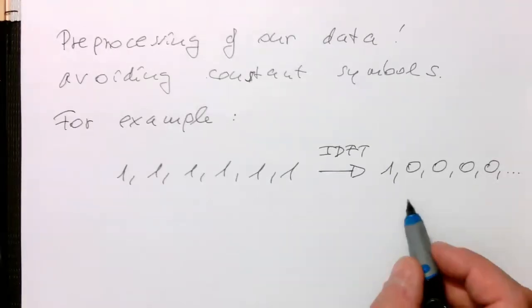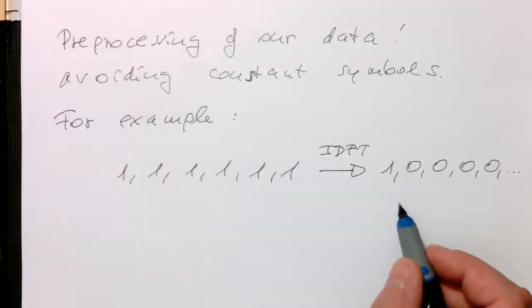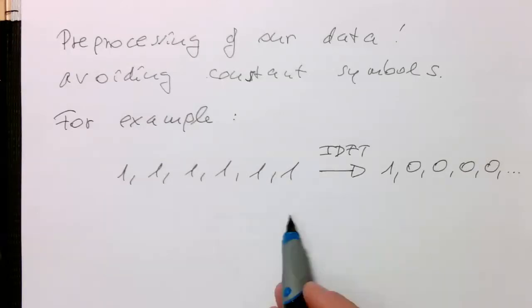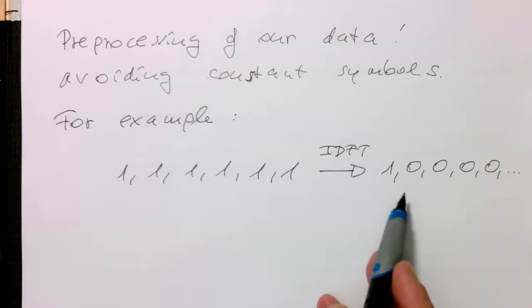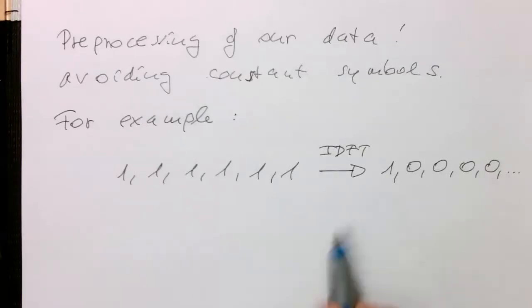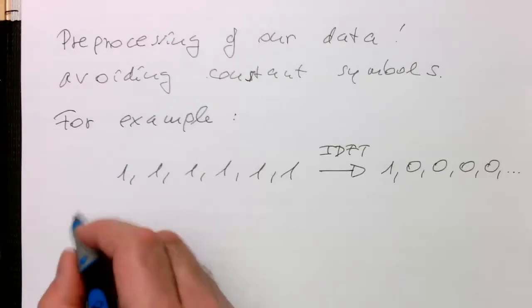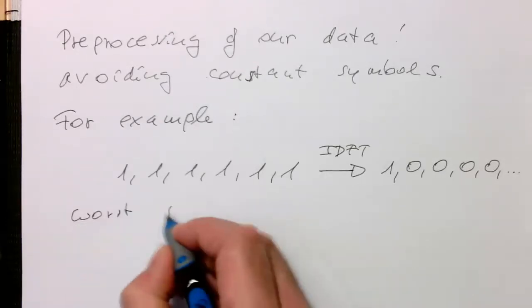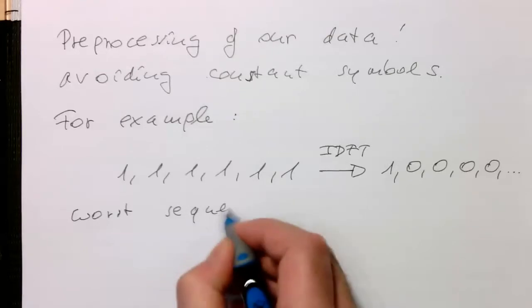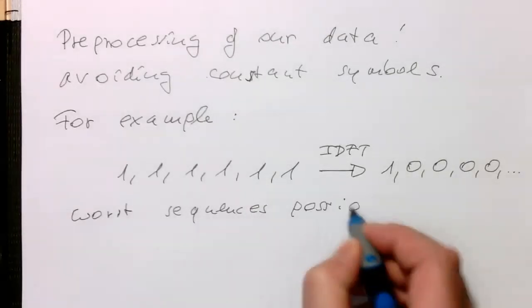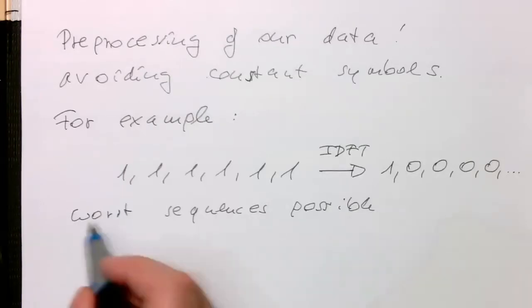This would be one of our worst case scenarios. So imagine we are just transmitting a bit stream just containing ones, then this would be impossible to be detected on the receiver side. So that's probably one of the worst sequences possible.